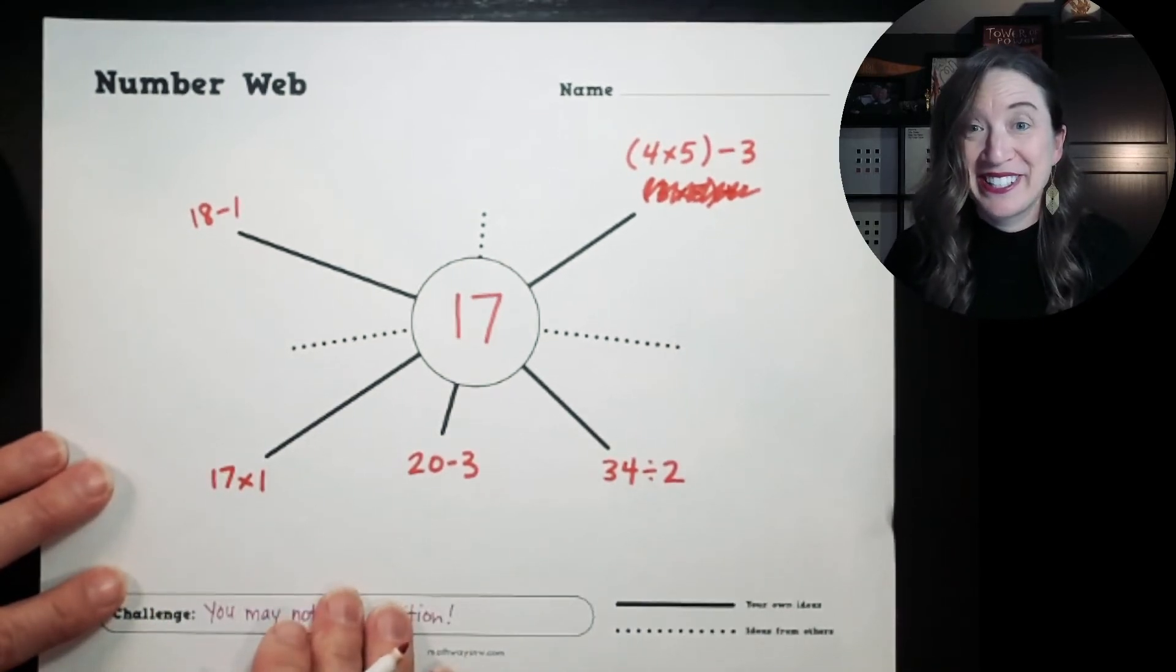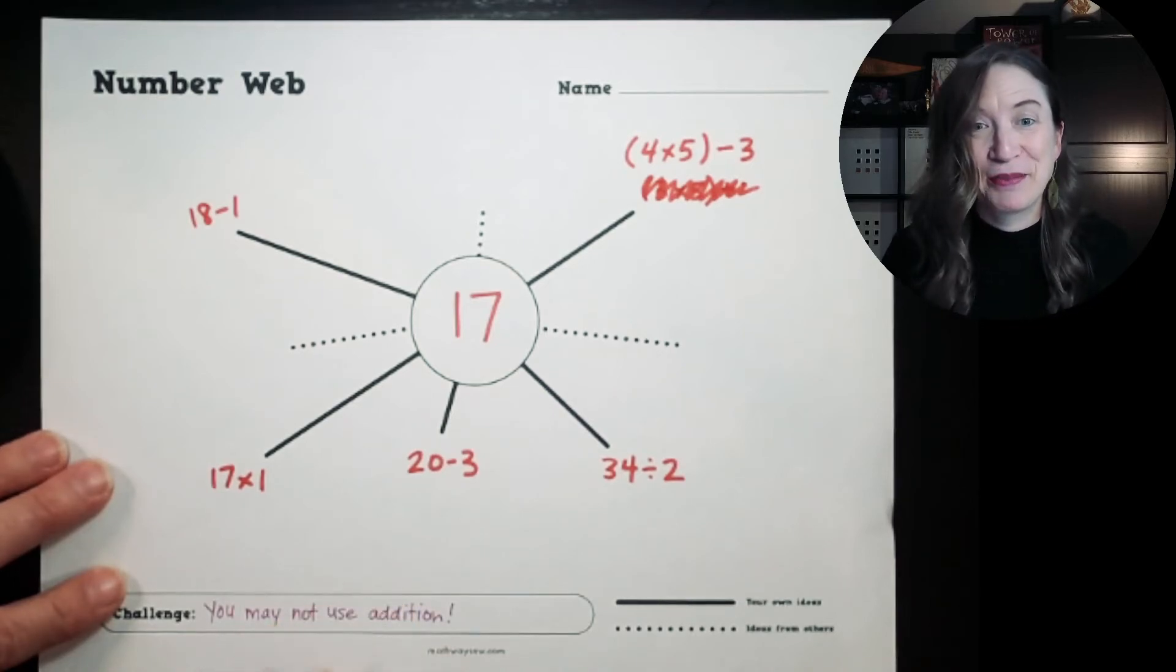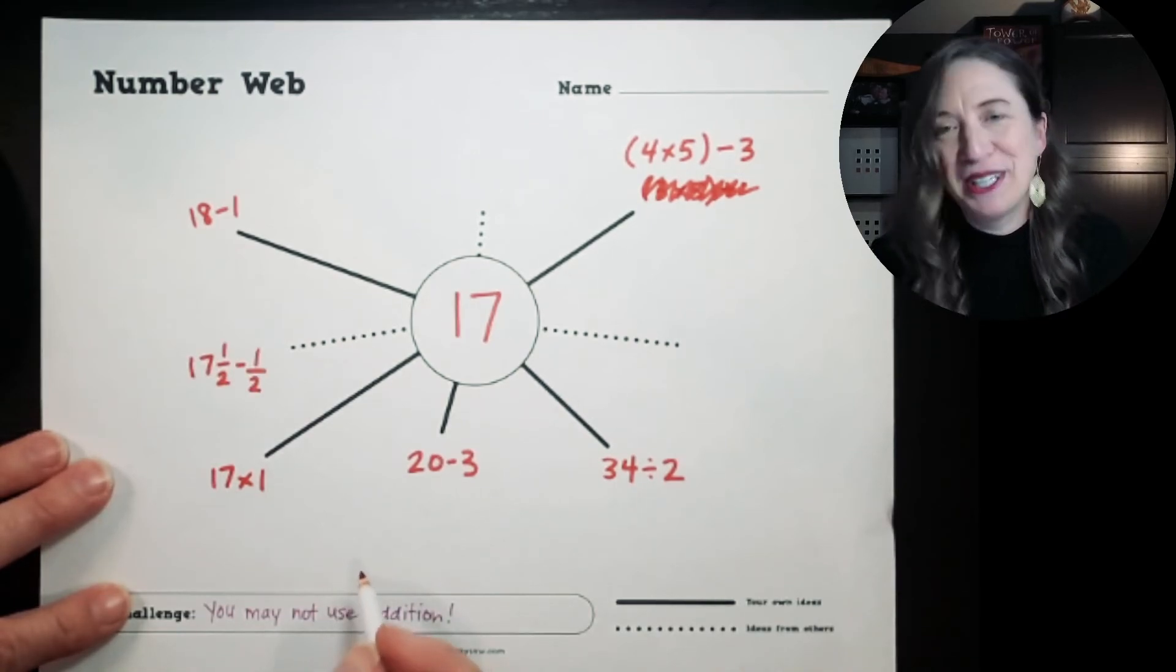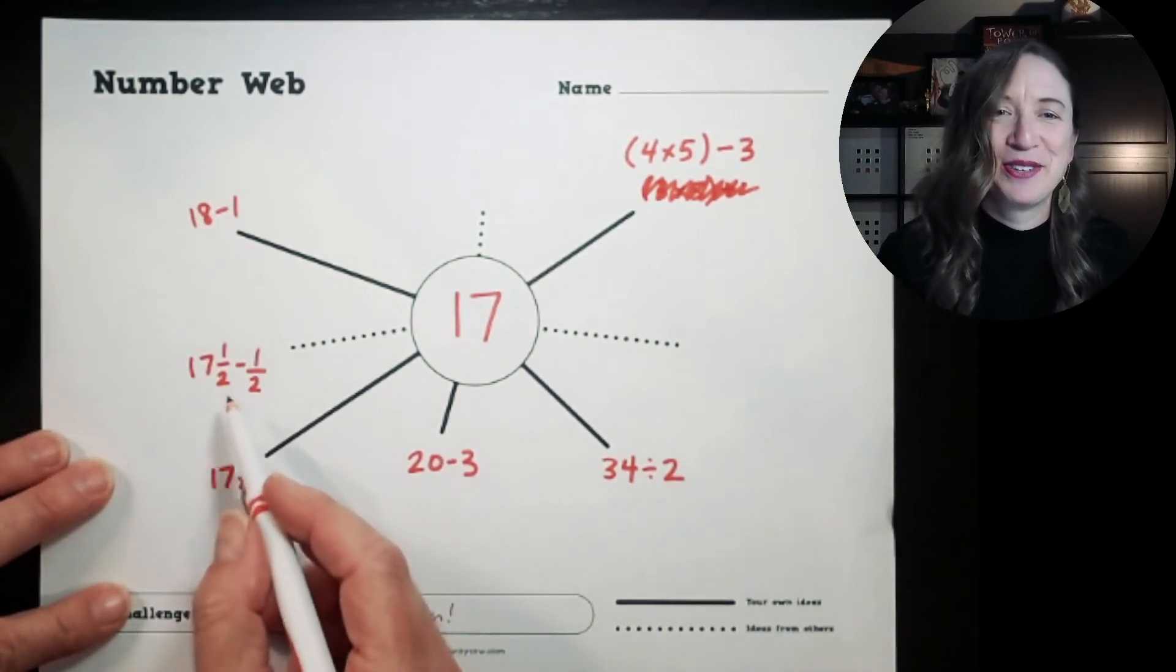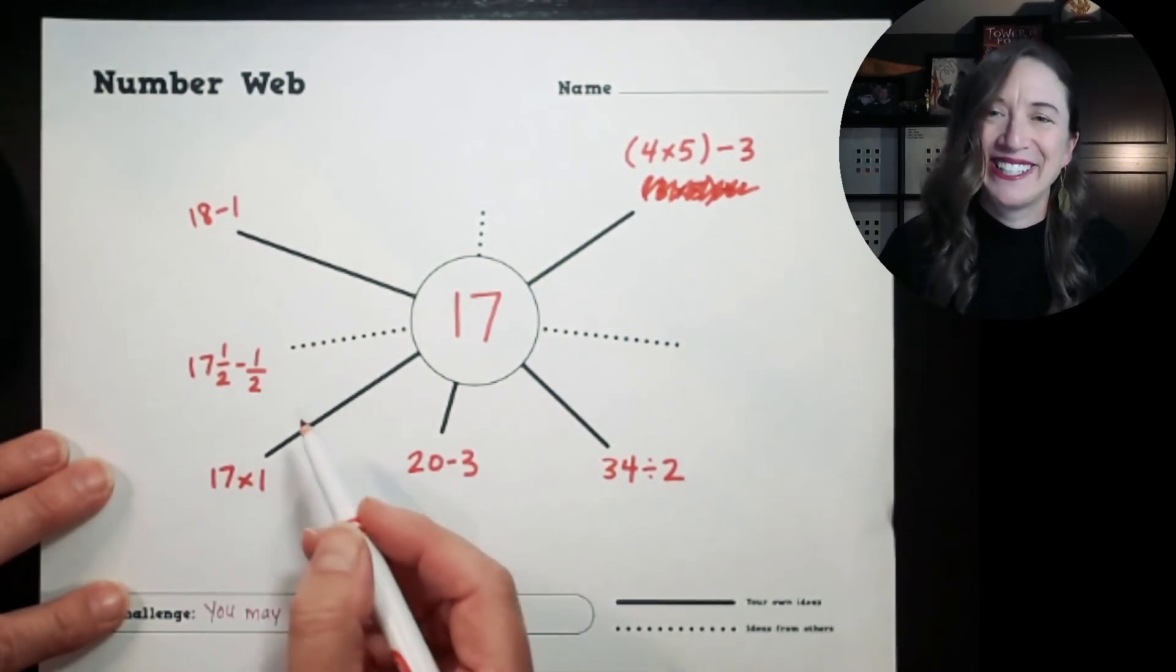And then I have to go to three friends and see if they remember to not use addition. This is a great way to check my friend's work as well. Let's see what I got from my friend. My same friend that shared fractions with me on the first one shared this one: 17 and a half minus that one half is 17.